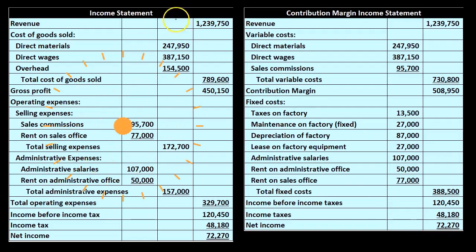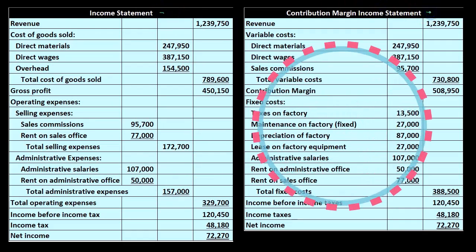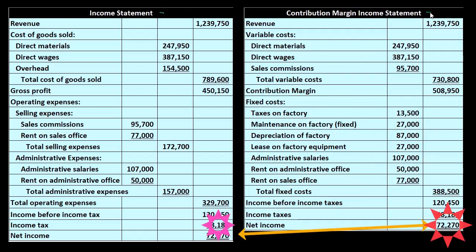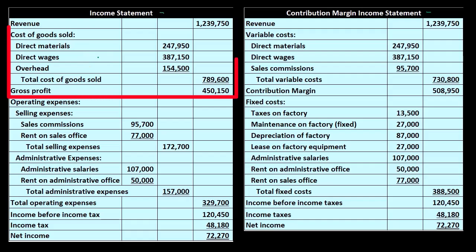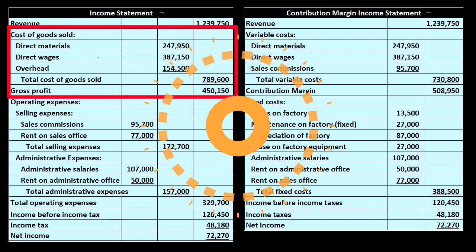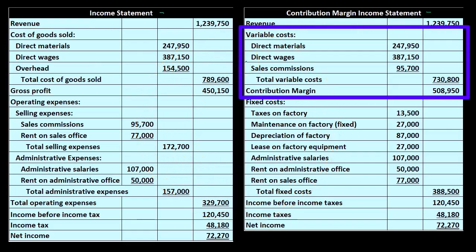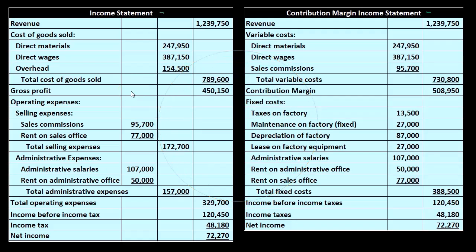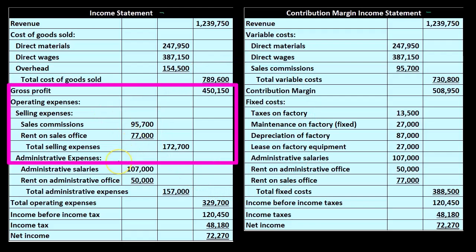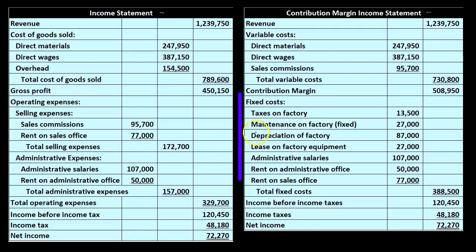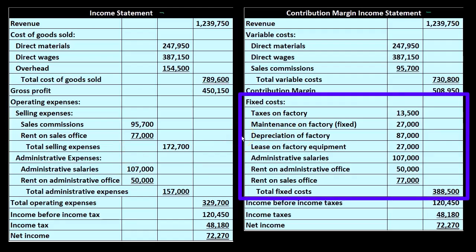Comparing the two: the normal income statement, which we must use for external users, categorizes expenses by what they do; the contribution margin income statement — our internal CVP statement — categorizes expenses by how they behave. Both have their pros and cons. There's a reason we want to see the standard format to understand spending in particular groups. However, there are benefits to a contribution margin type of income statement as well, as we'll see.